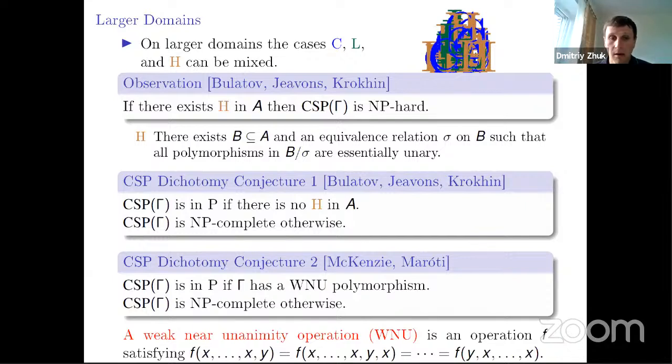Notice that in one direction, this conjecture falls from the result of Ralph McKenzie and Miklos Maroti. So we knew from 2006 that if we don't have weak unanimity polymorphism, then the problem is NP hard. So the only remaining open question was to find a polynomial algorithm for all gamma that are preserved by weak unanimity polymorphism.